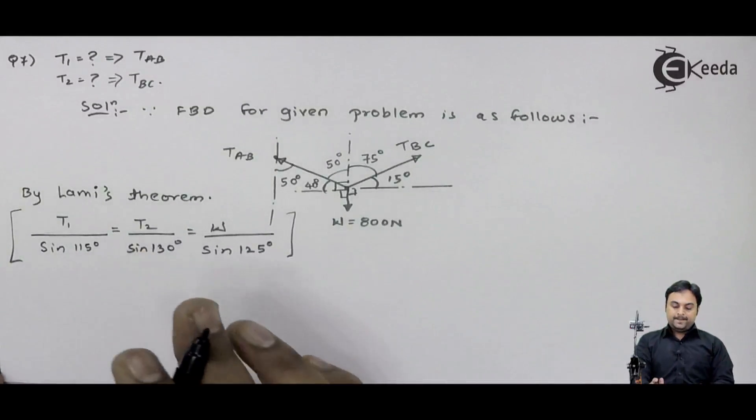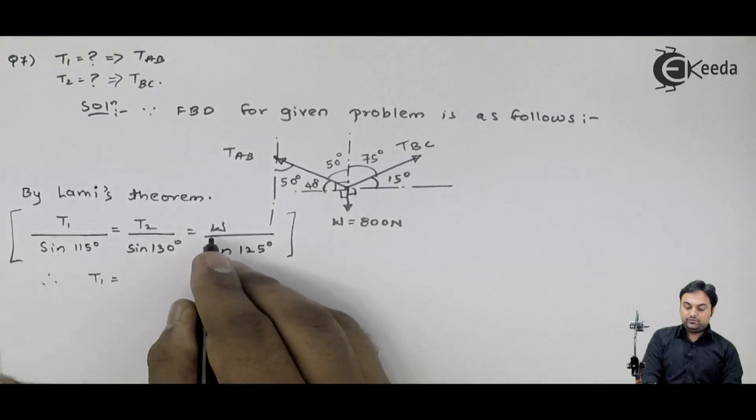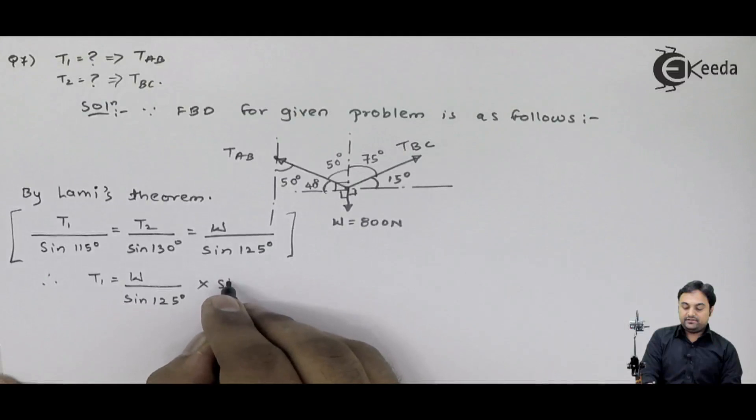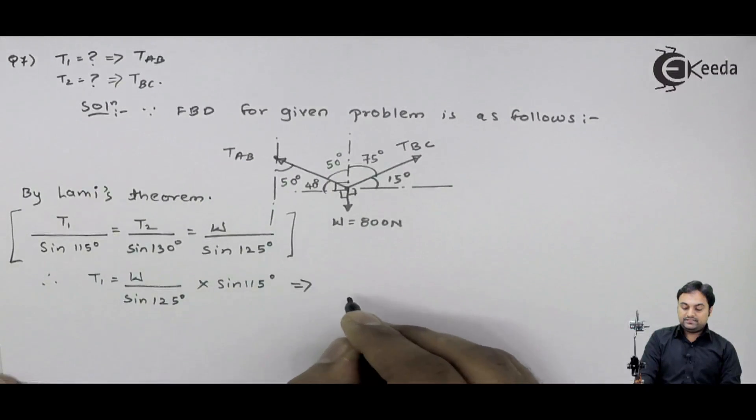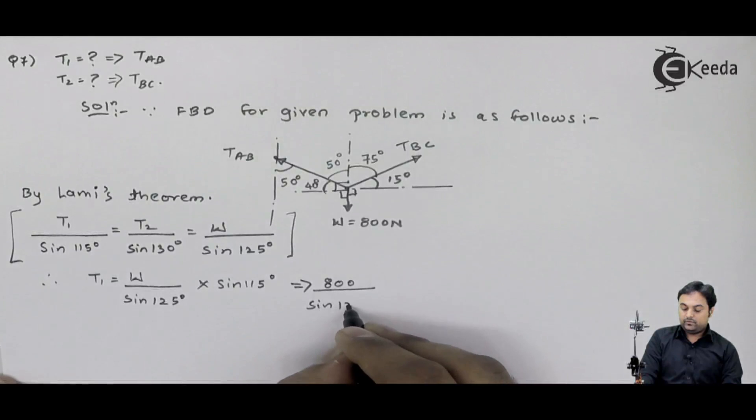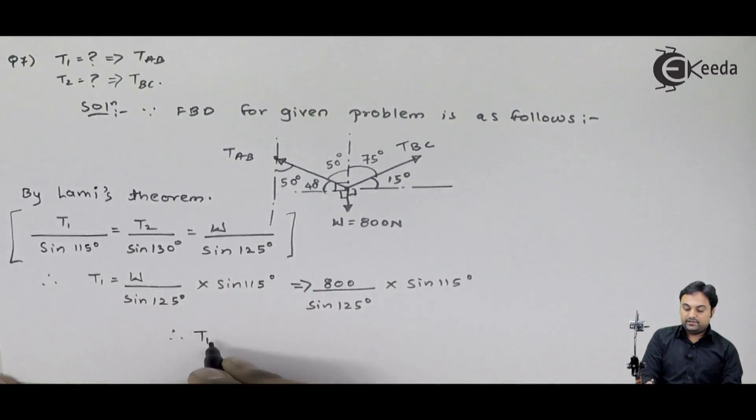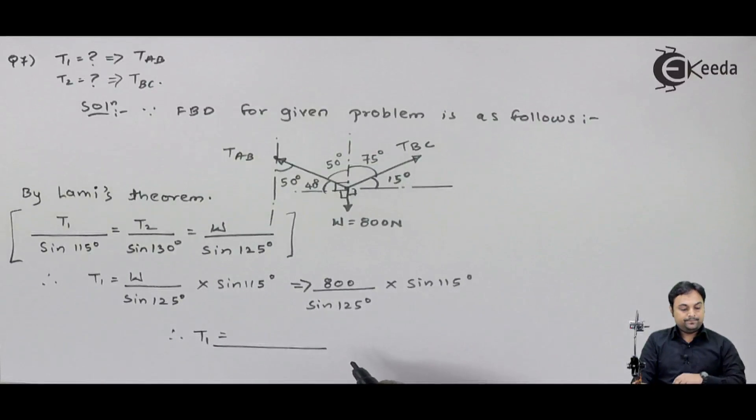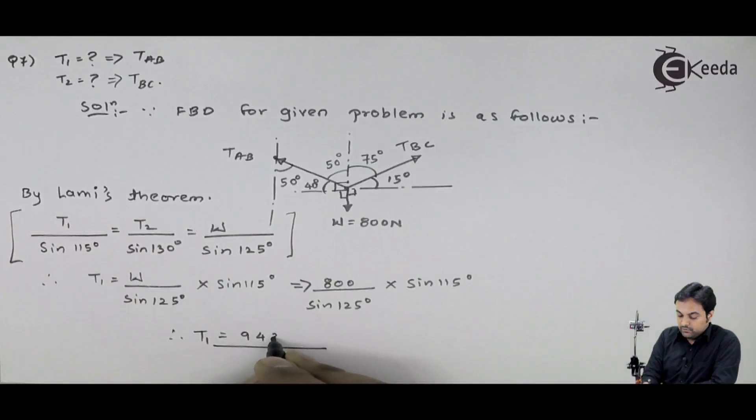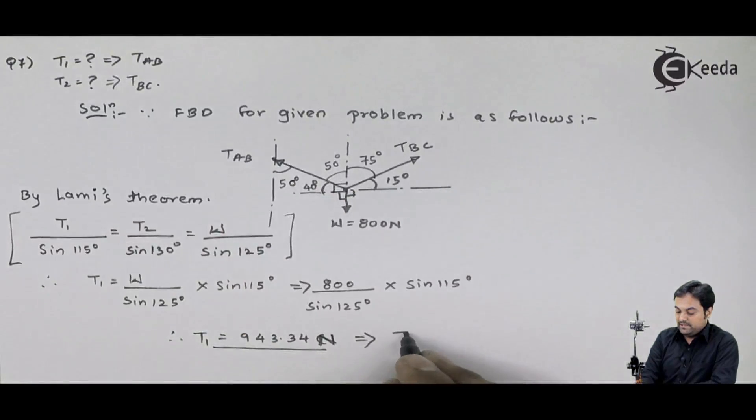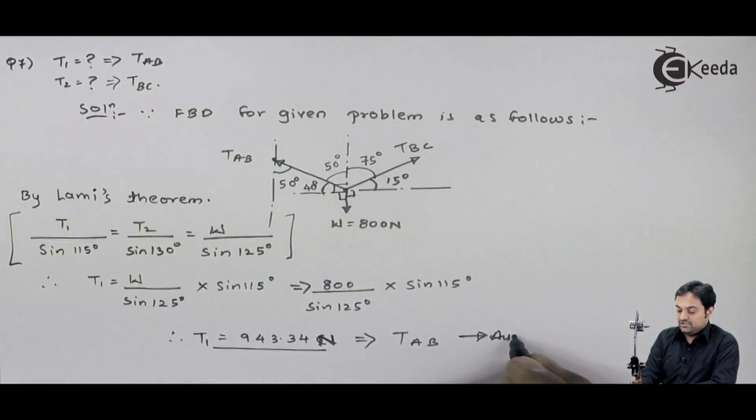Now I need to calculate T1 and T2. So I will say that therefore T1 will be equal to W upon sine 125, sine 115 I will send on the other side. So that is equal to W is 800 Newton, 800 upon sine 125 into sine 115 degree. So if I calculate this term, I will get my answer of T1 as 943.34 Newton. Once I get T1, it is nothing but tension in the string AB. So I have my first answer, tension in string AB.